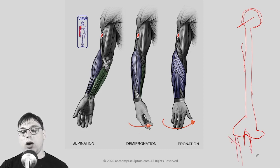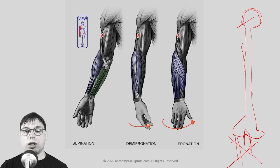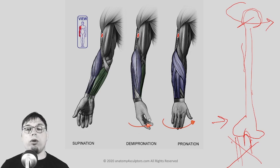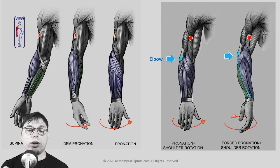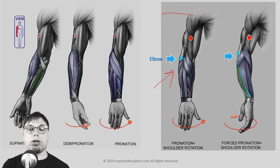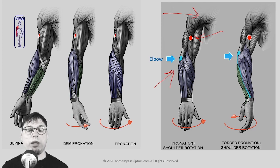Normal supination and pronation occurs in the forearm — the ulna and radius cross — without the elbow changing position. When you see the elbow rotating, the rotation is actually happening at the glenohumeral joint. In forced pronation, the elbow rotates toward you, meaning movement is happening at the shoulder joint, not just from crossing the forearm bones. The deltoid insertion then becomes visible from the front rather than the side.